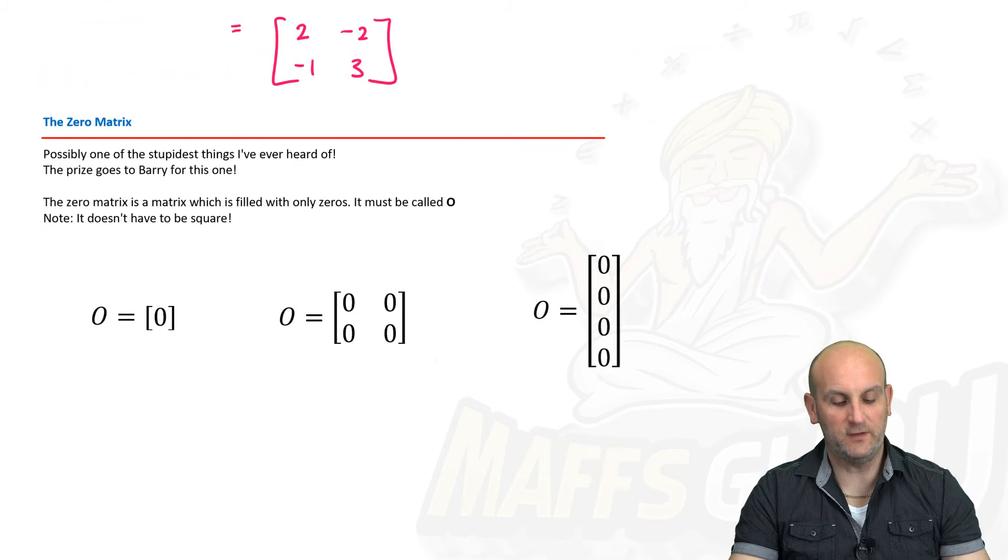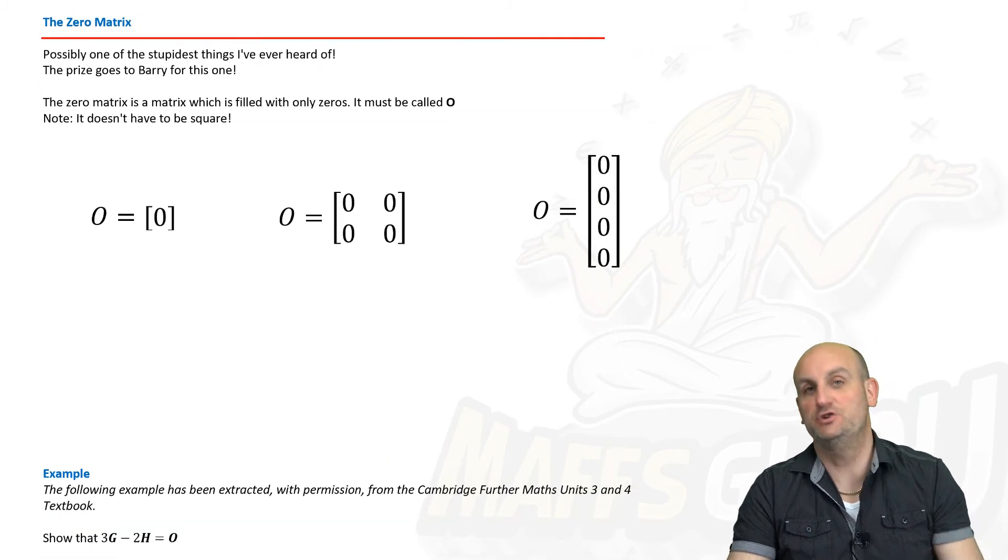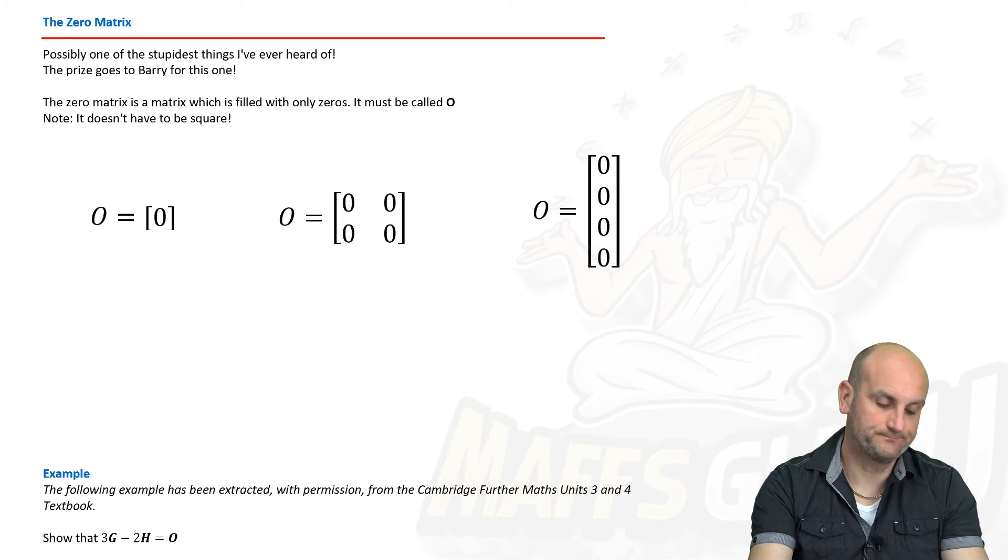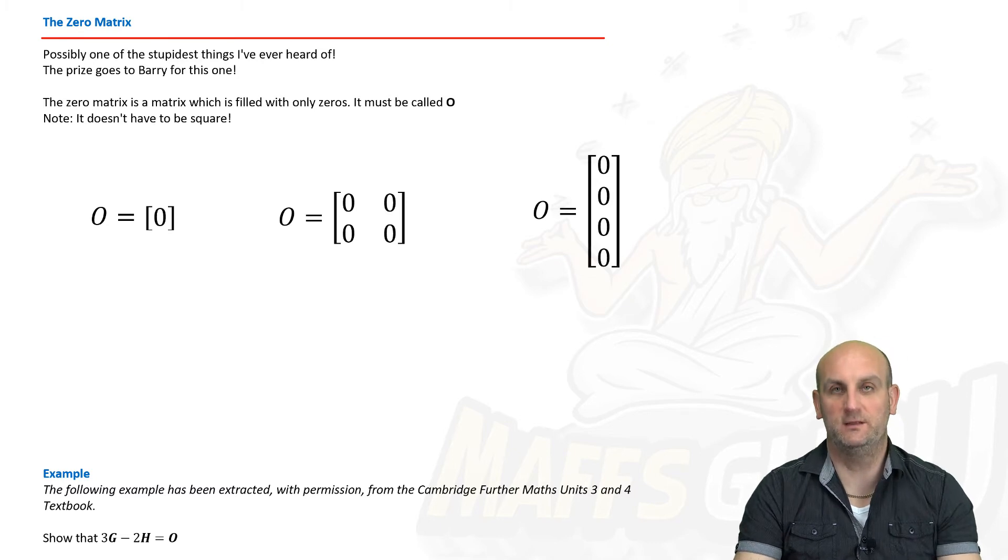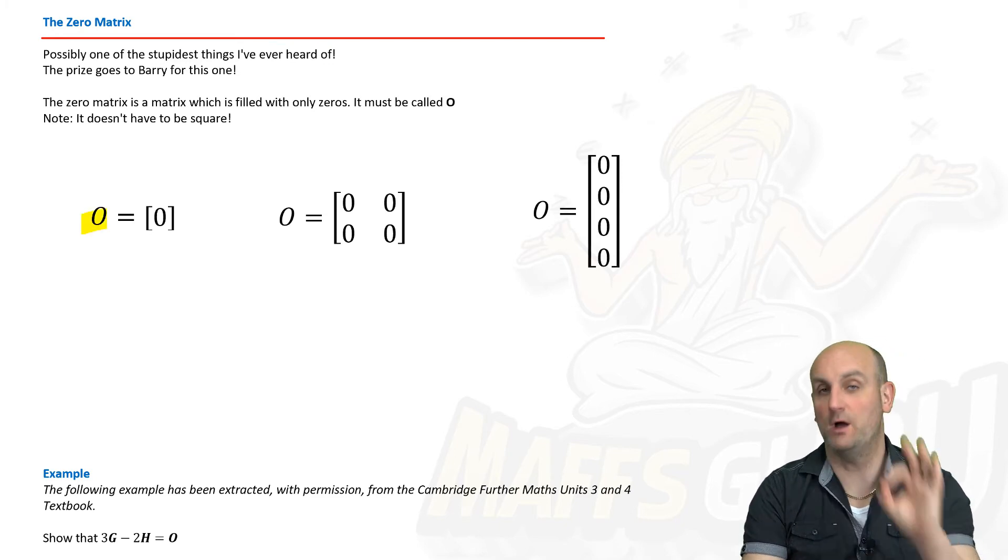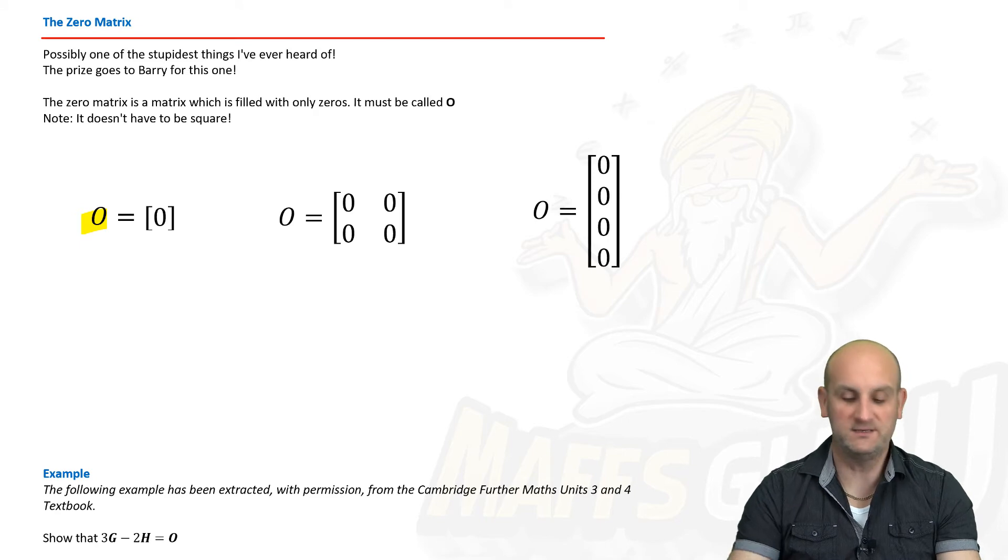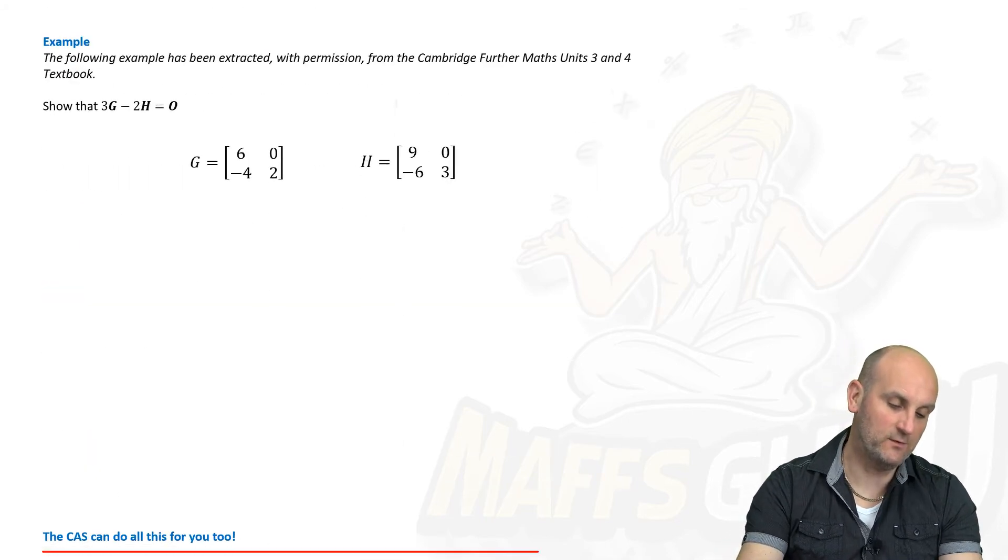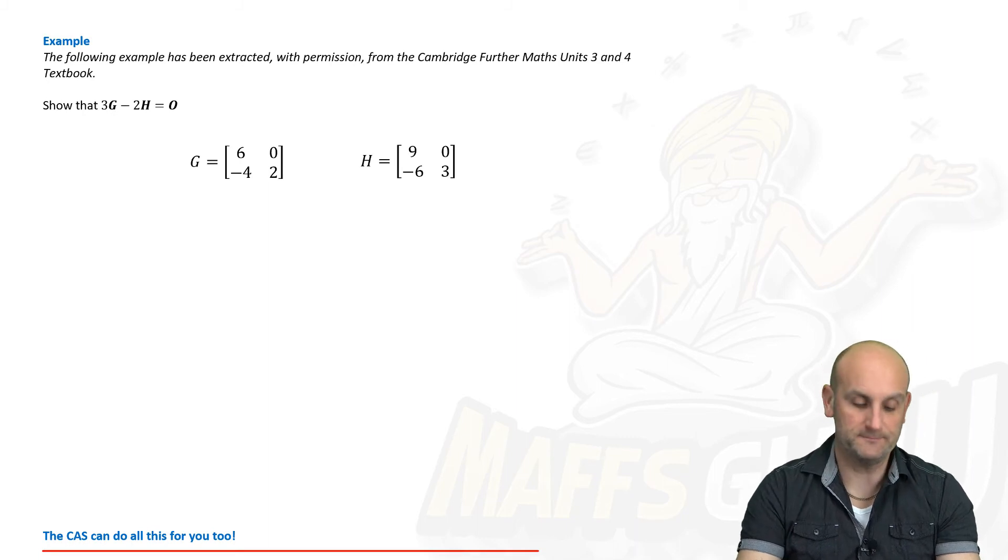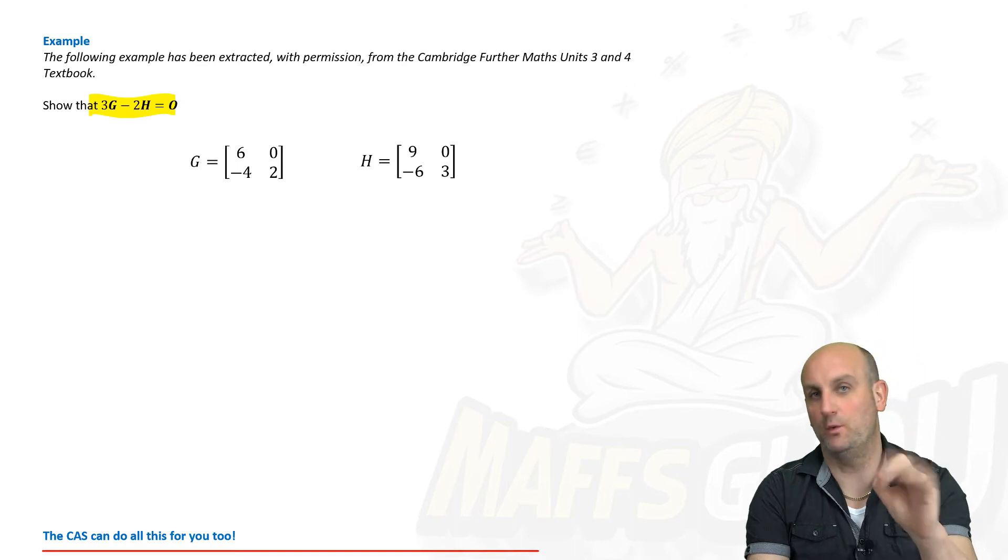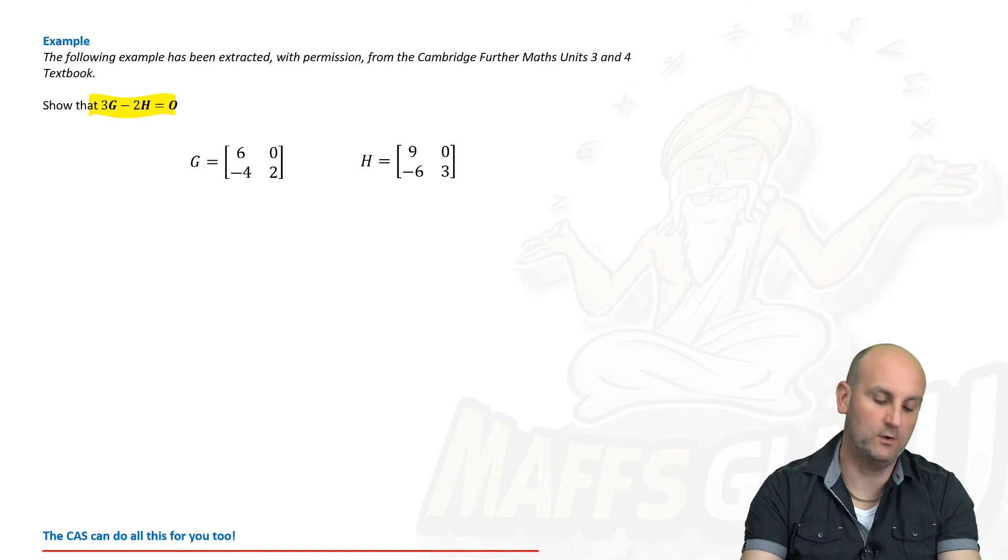The zero matrix. Now, I'm being a bit honest here. Possibly one of the stupidest things I've ever heard of. I'm sure it's useful, but anyway. The zero matrix is basically a matrix filled with zeros. It can be any size. It doesn't matter. What is more important to know is that it has a capital O as its describer. So, if you ever see a capital O, it's trying to trick you. It means the zero matrix. And, I've given you three examples there of a zero matrix.